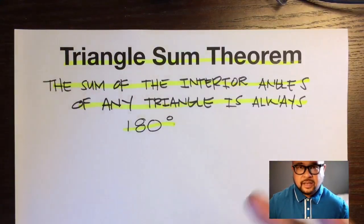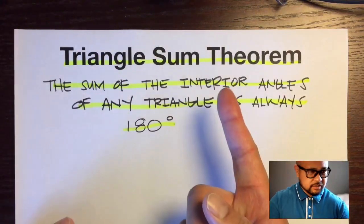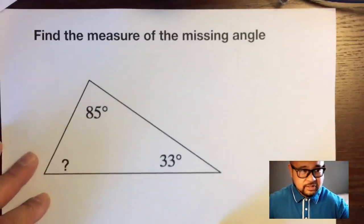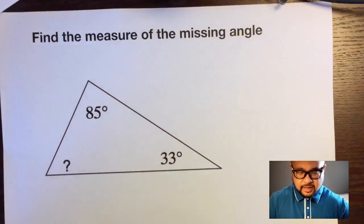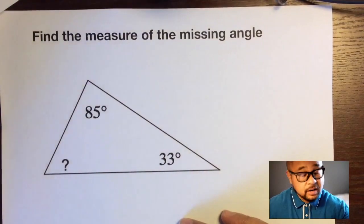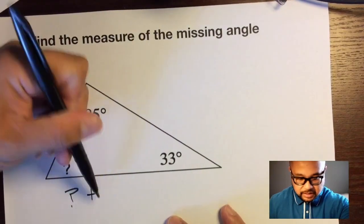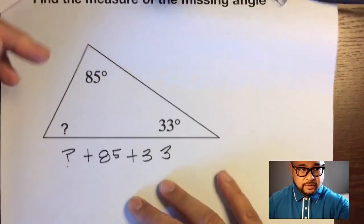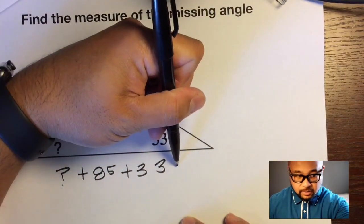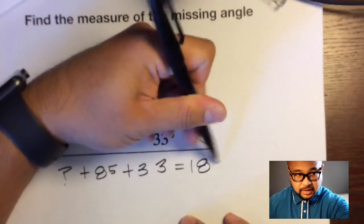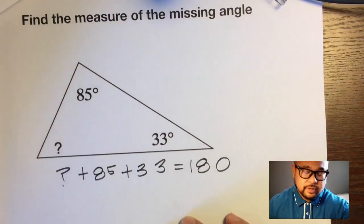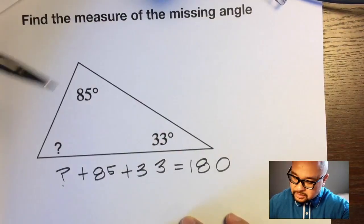Make sure you know that this is called the Triangle Sum Theorem. So if someone asks, 'Hey, what's that theorem about the three angles adding up to 180?' — Triangle Sum Theorem. Let's do some examples. Find the measure of the missing angle. All three of these are interior angles of a triangle, so we set it up: question mark plus 85 plus 33.